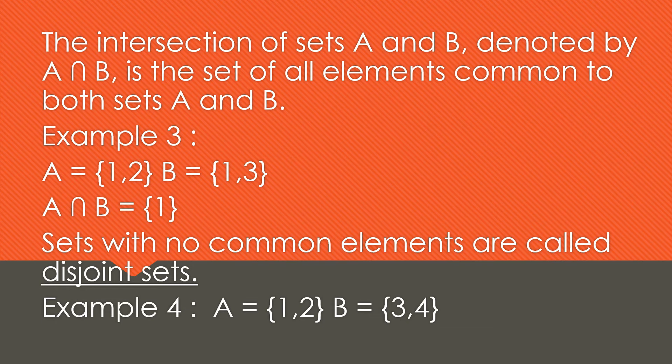Sets with no common elements are called disjoint sets. Example number four: A = {1, 2}, B = {3, 4}. The answer is the null set. This is called a disjoint set because it has no common elements.